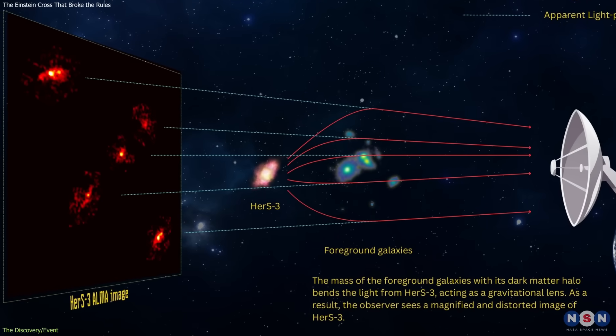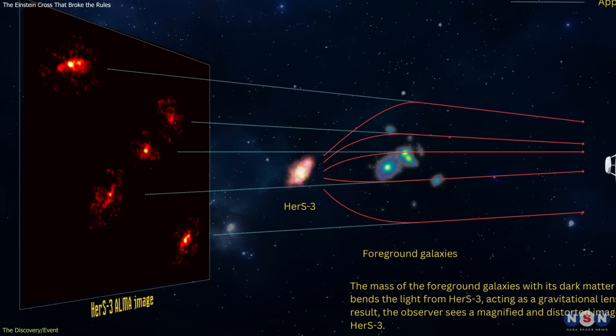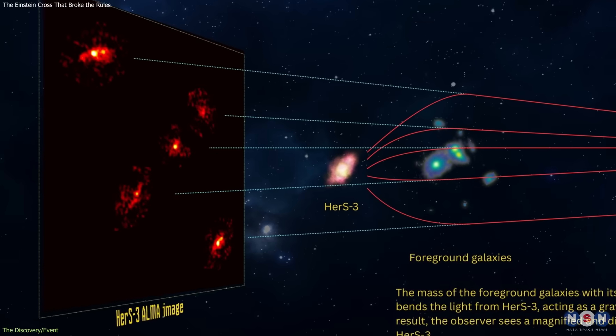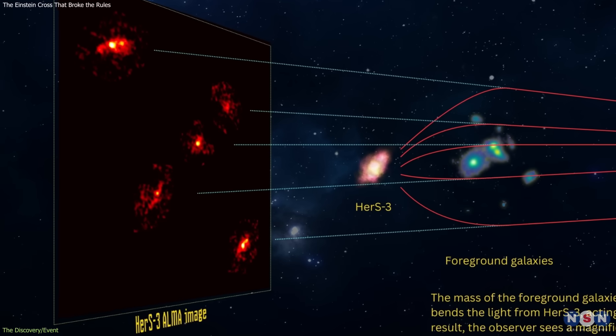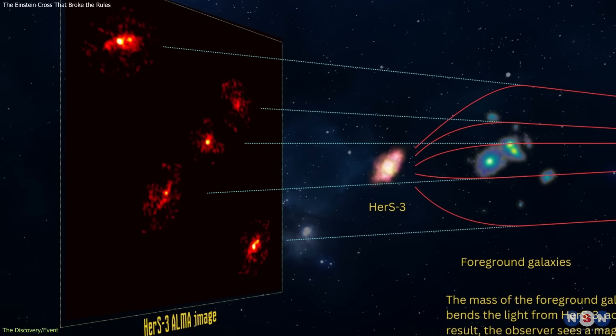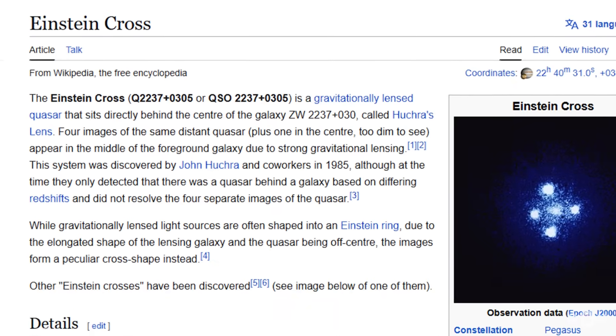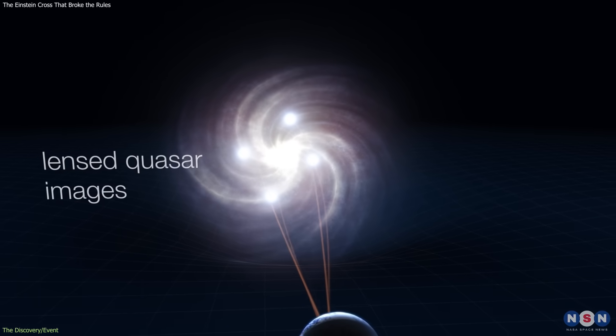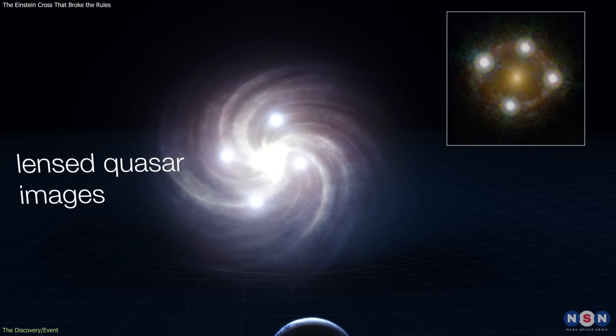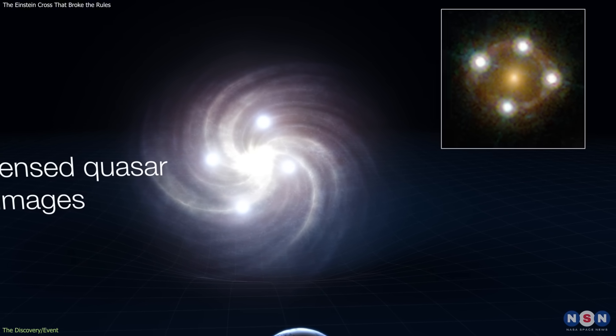The combined gravity of these foreground galaxies acted as a lens, magnifying and splitting the image we see from Earth. This arrangement produced a phenomenon known as an Einstein cross, where a single galaxy appears as four points of light arranged symmetrically around the lensing object.